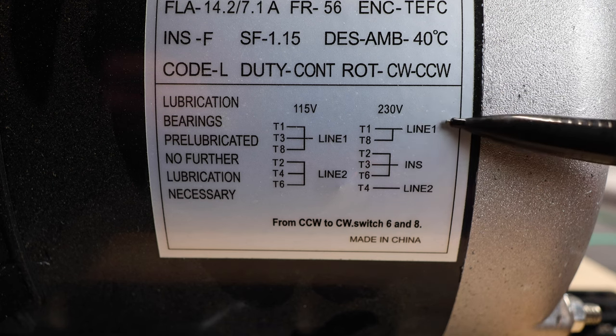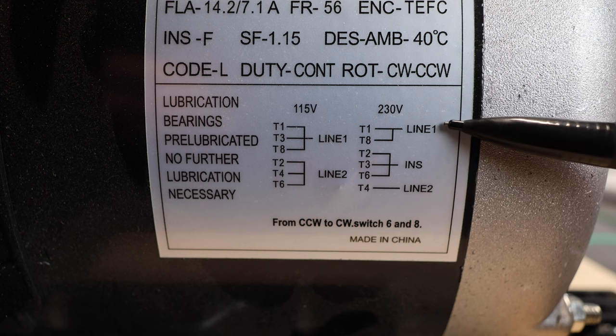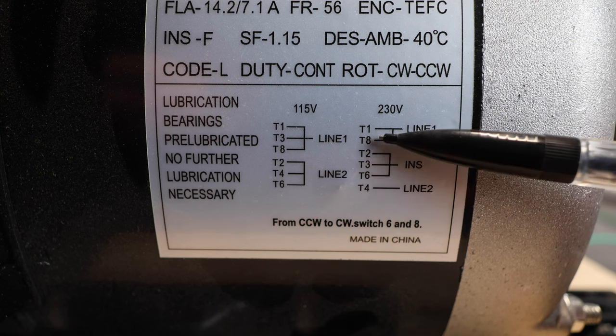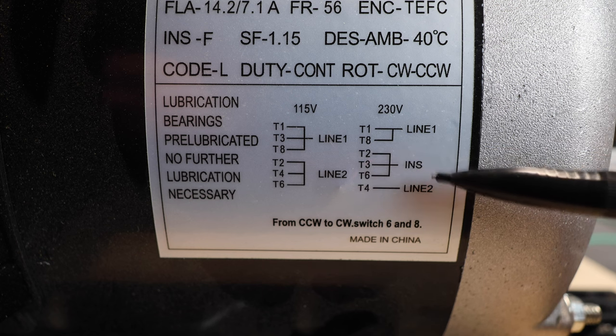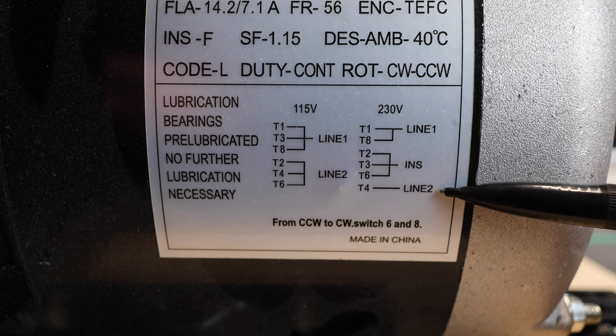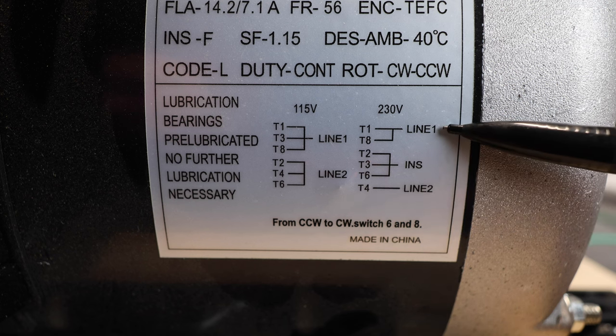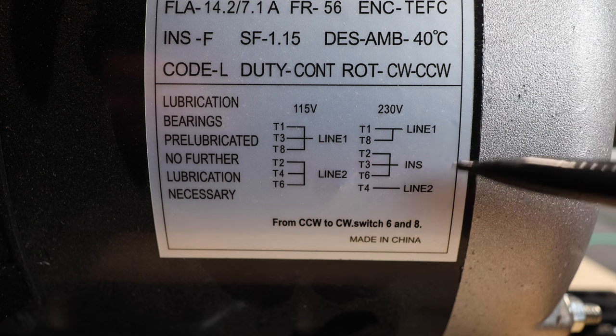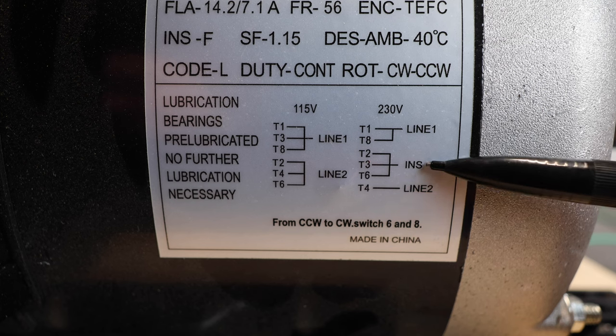Now if we start looking at the actual diagram over here for our high voltage side, we can see that line one will need to be connected to T1 and T8. The T2, T3, and T6 will just be insulated and connected together. And then finally, L2 will be connected over here to our T4. Now just to point this out, because I got another question on this, was these line one and line two, this is your incoming power. So these are your power wires coming into the motor. And then again, this just means insulated, so you're just connecting all those wires together.